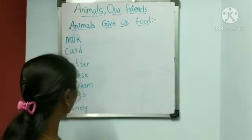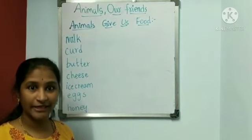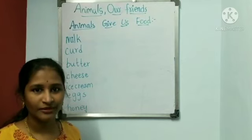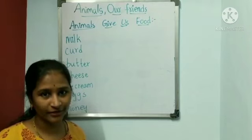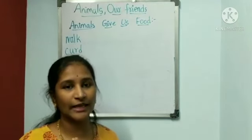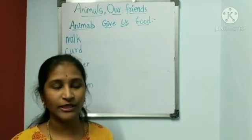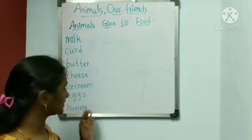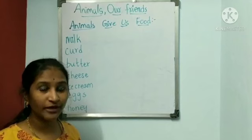Some animals give us eggs — like ducks, geese, and hens. Eggs are rich in protein and very good for our health. Some people will eat the flesh of certain animals like goat and hen. And honey bees give us honey, which is also good for our health.